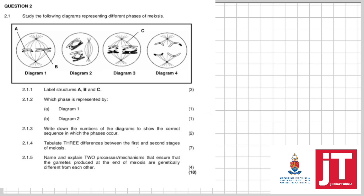Let's look at some meiosis questions. Label structures A, B, and C. A is pointing to a chromatid. B is pointing to the center of that chromatid — so that's the centromere. C is pointing to the spindle fiber. Which phase is represented by diagram 1? The chromosomes are in the middle and they're single, so that is metaphase 2. Diagram 2 shows the very important process of crossing over. Write the numbers of the diagrams to show the correct sequence in which the phases occur — the sequence will be 2, then 3, then 1. Tabulate three differences between the first and second stages of meiosis: first stage has crossing over, second stage has no crossing over; first stage involves homologous chromosomes, second stage involves single chromosomes; and two cells form after meiosis 1, then four cells form after meiosis 2.